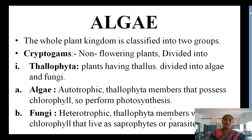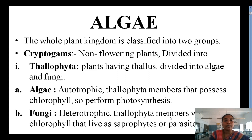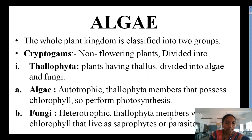What is algae and how is it classified? It is derived from the plant kingdom. The whole plant kingdom is classified into two groups, namely Cryptogames and Phanerogames. Cryptogames means Non-Flowering Plants, and Phanerogames are Flowering Plants. The Non-Flowering Plants are first divided into Thallophyta. Thallophyta includes plants which have a Thallus, and is further divided into Algae and Fungi. Today our topic is Algae.